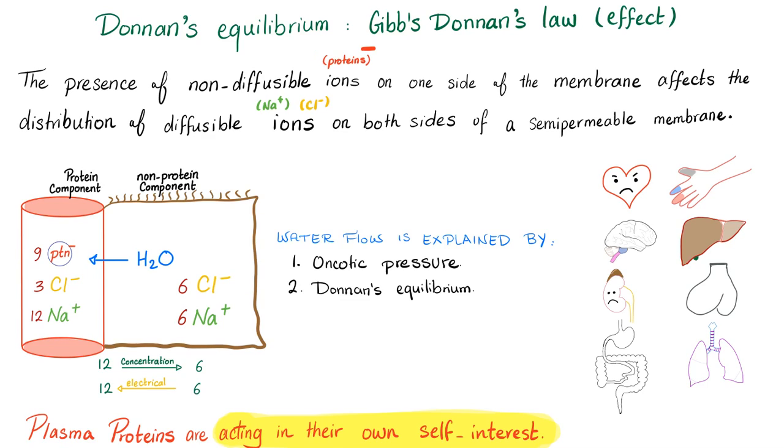So next time when your professor asks you, hey student stand up, what is the Donnan's equilibrium, with such unction in his voice, in your mind Donnan should disappear and Friedman should appear. The proteins are acting in their own self-interest. Oh, the presence of non-diffusible ions, proteins, on one side of the membrane affects the distribution of the diffusible ions, sodium and chloride. Here is 15 but here is only 12, on both sides of semipermeable membrane. And this is one of the forces that allow the water to flow from the non-protein compartment into the protein compartment, maintaining an effective arterial blood volume sufficient for tissue perfusion. And that's it.